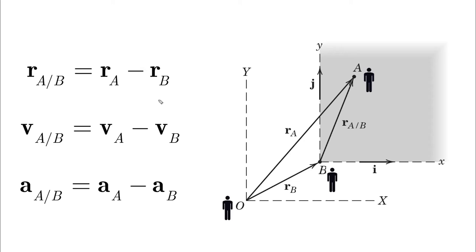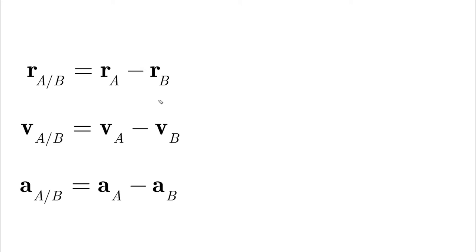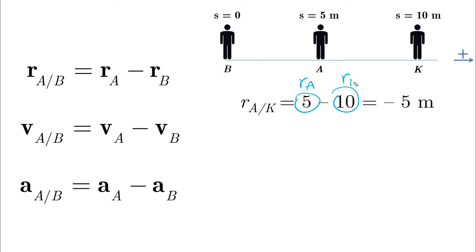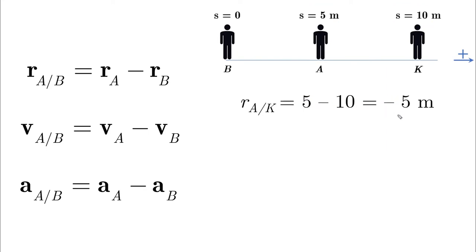Now we can see how we made the initial guess. RA relative to K means RA minus RK. RA is 5 meters positive, RK is 10 meters positive, so 5 minus 10 is minus 5 meters.